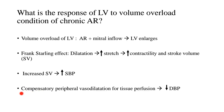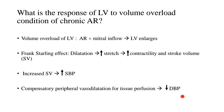At the same time, there is compensatory peripheral vasodilation to allow tissue perfusion, since so much blood is regurgitating back into the LV. This peripheral vasodilation contributes to lowering of the diastolic blood pressure. Hence, we get an increased pulse pressure — systolic blood pressure is increased and diastolic blood pressure is decreased, and when you subtract diastolic from systolic, you get a high pulse pressure.